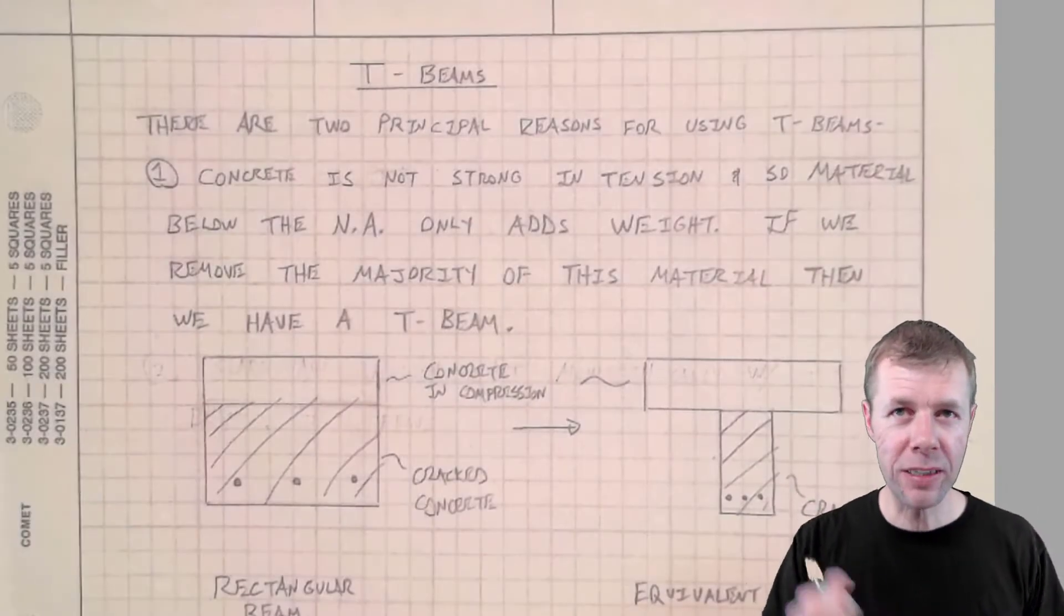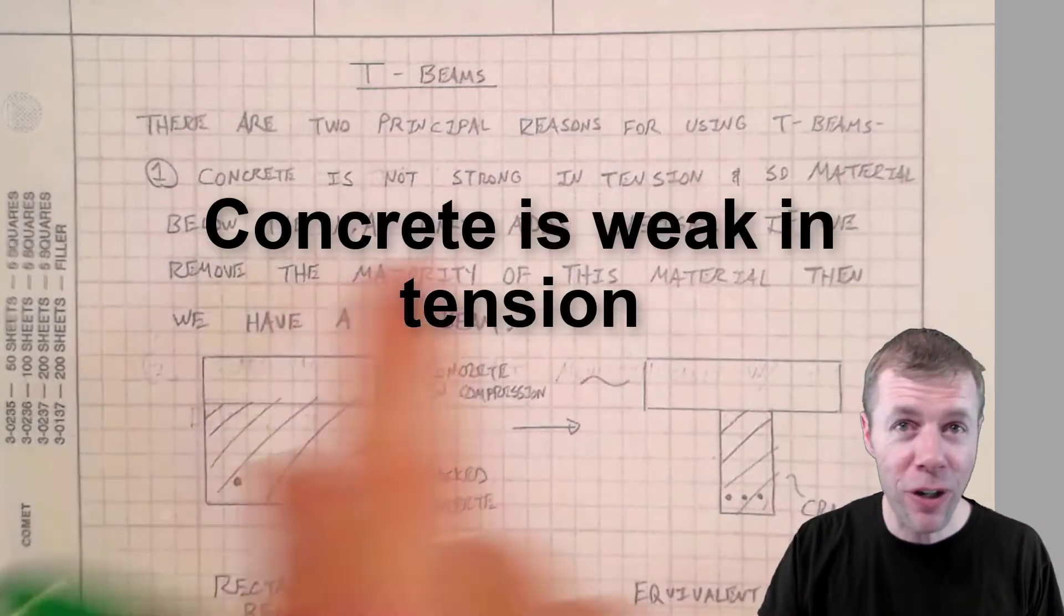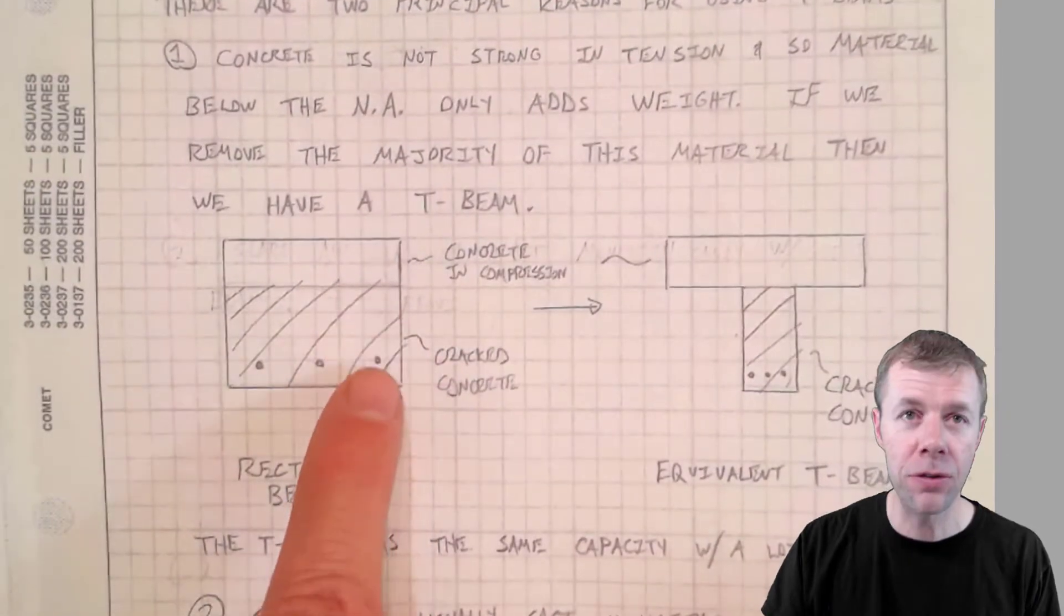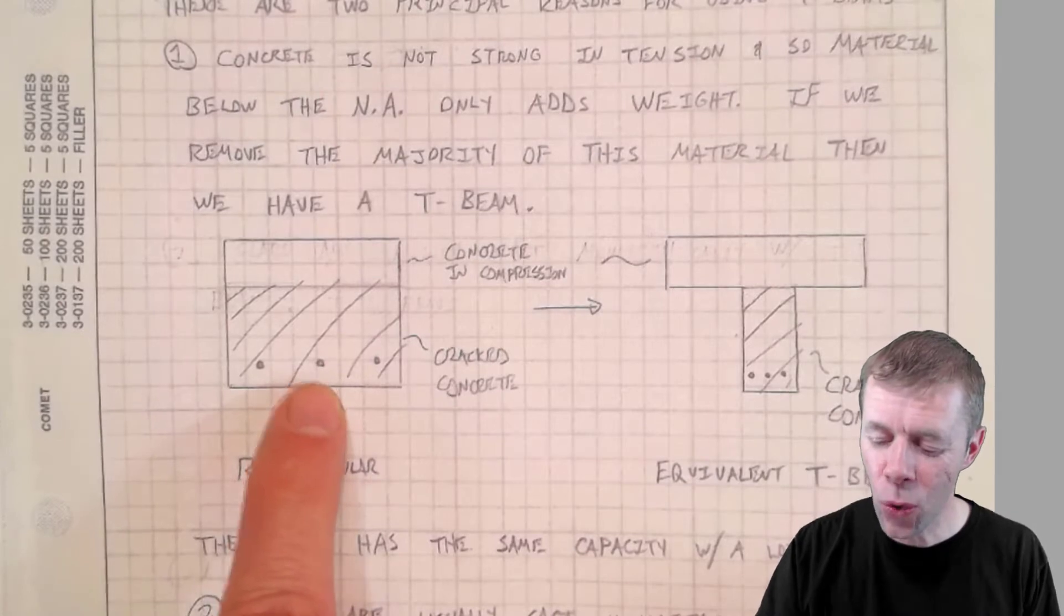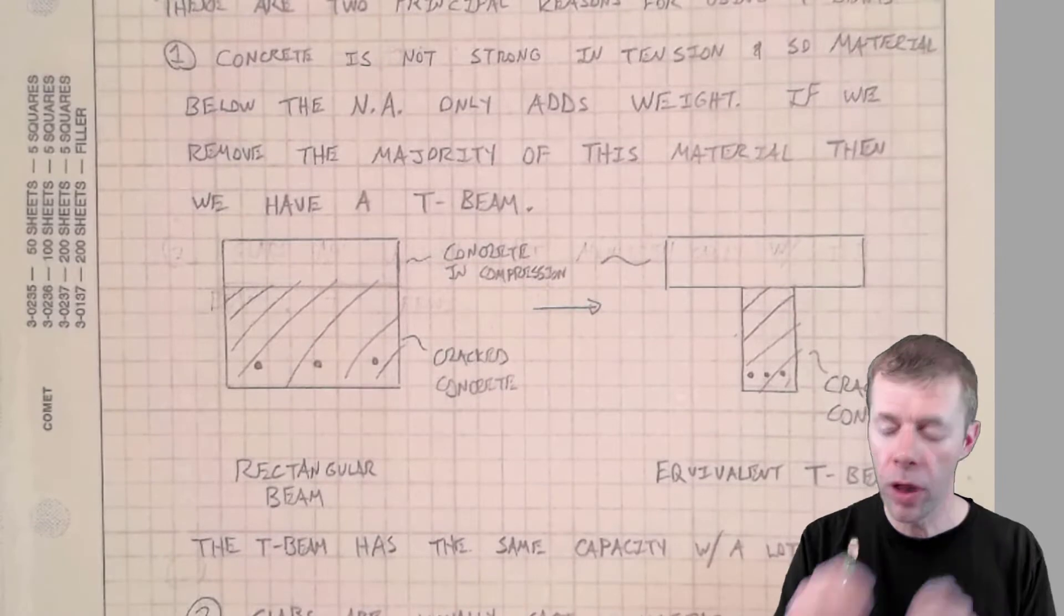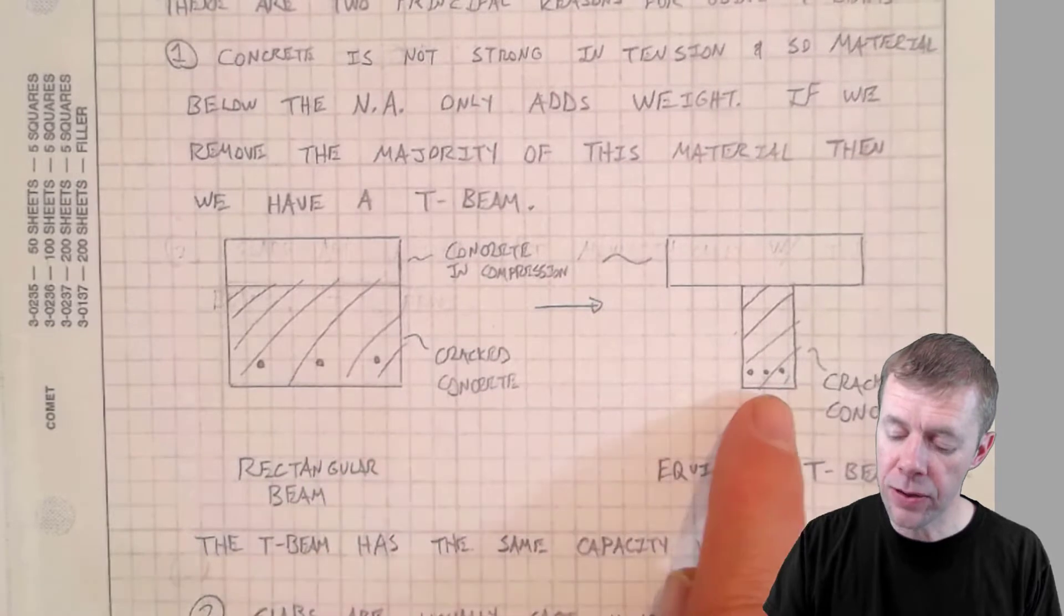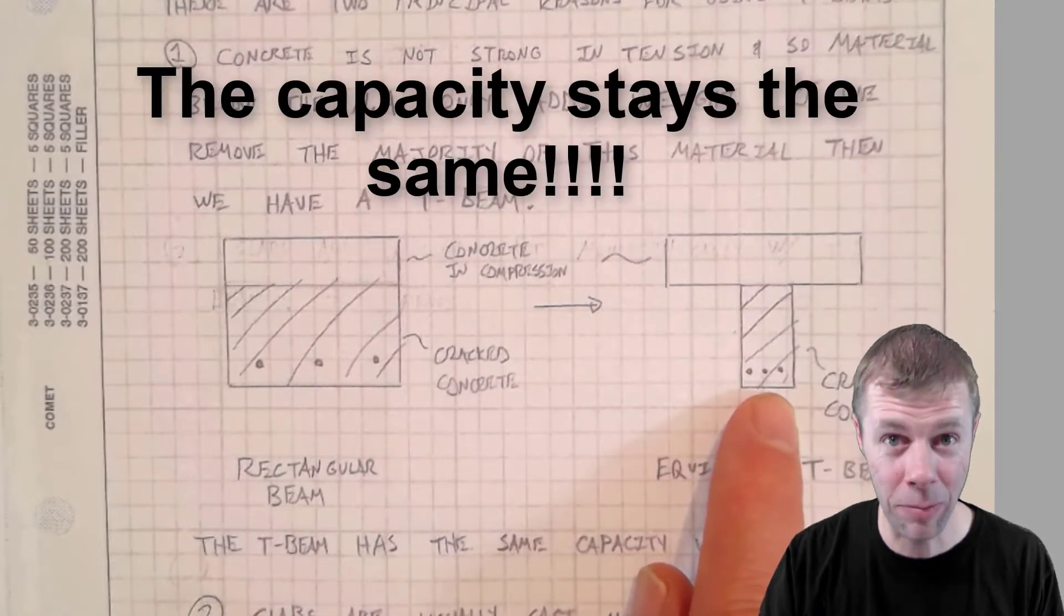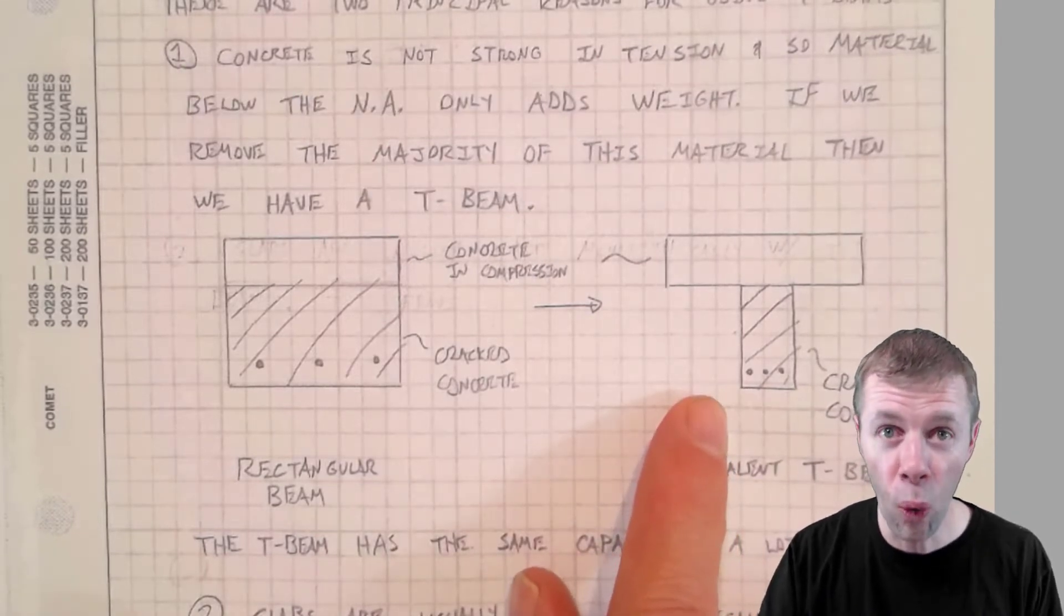There are two principal reasons to use a T-beam. Number one, concrete is not very strong in tension. And so anything we have below the neutral axis is just going to crack. So why do we have it there? Because it's just going to add weight. If we're able to remove the majority of this material, like skinning it down, then we could still have the same amount of steel. We would just crack the concrete. And guess what? The capacity will be the same. And this is why T-beams are so awesome.